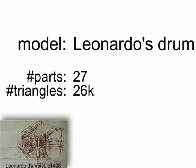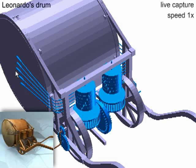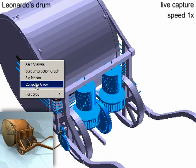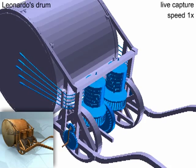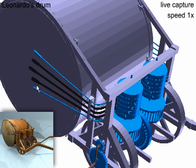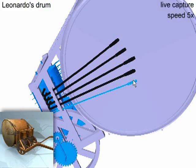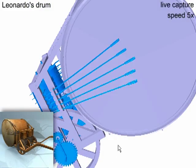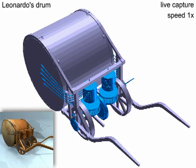We expect the user to tag parts without distinguishing geometric features. In this case, the user selects and tags the sticks as levers. Then the system computes the motion and generates the arrows.